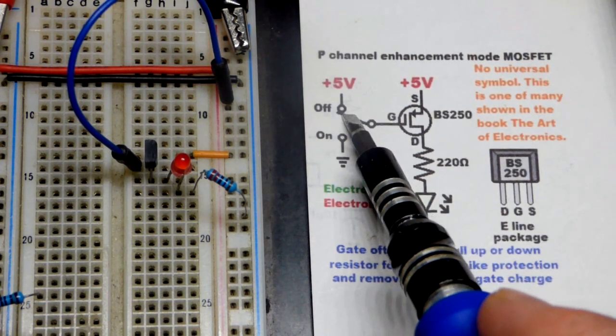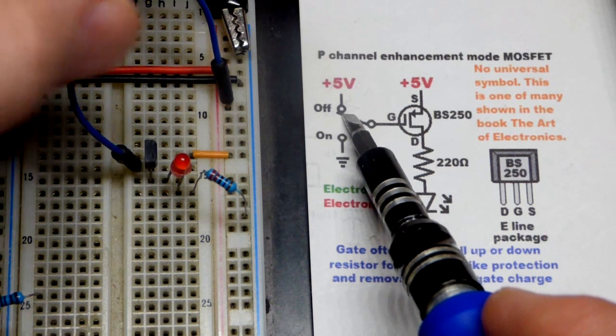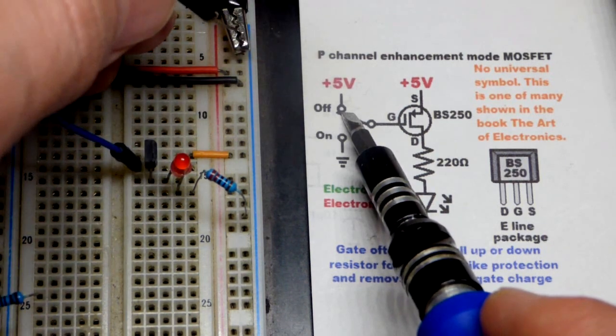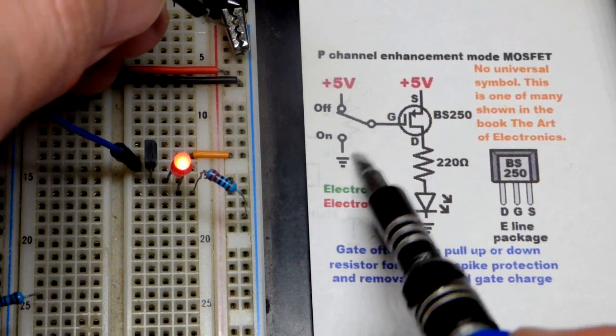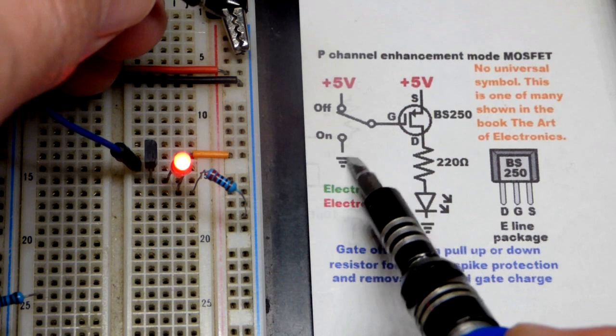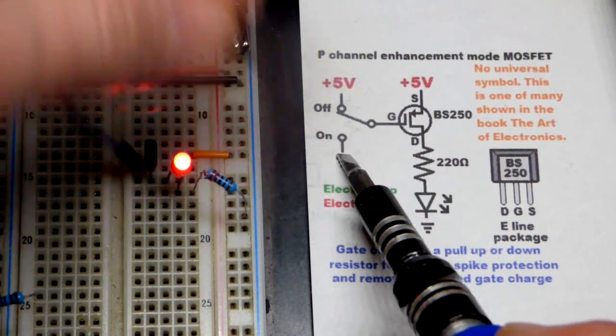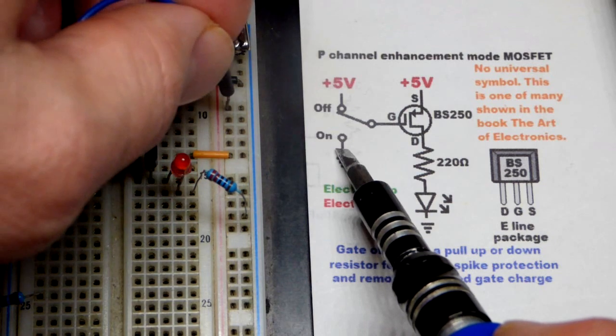So let's say we want it off when the switch is in the off position. But when it breaks from the off position we want it on, then we could add a pull-down resistor. Usually it's like 10k, but a 10k resistor that goes to the negative supply, that will instantly turn it on while this is floating. Make sure it's on.